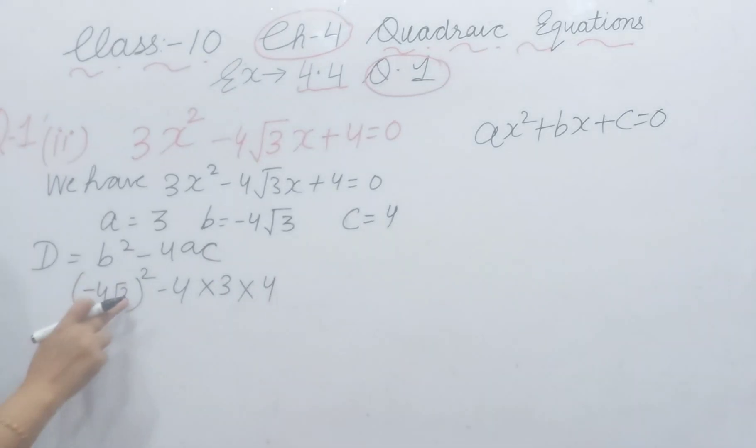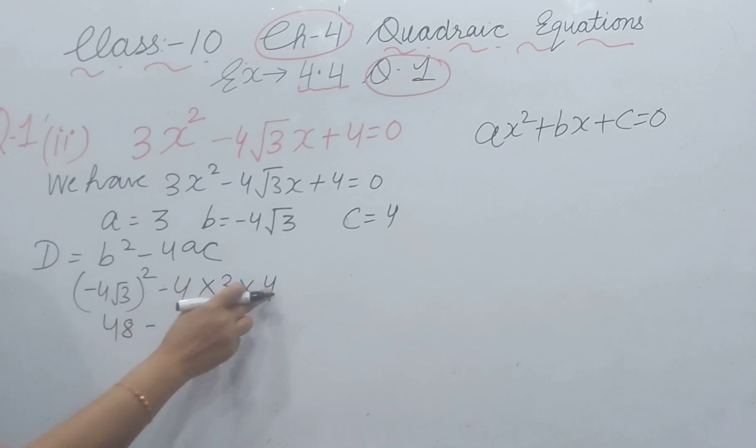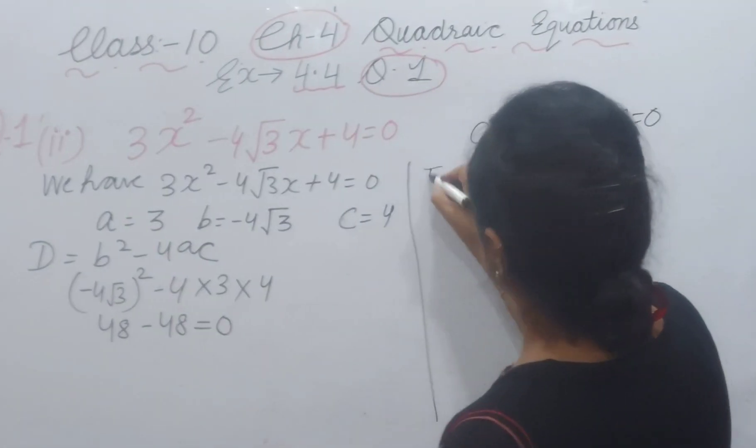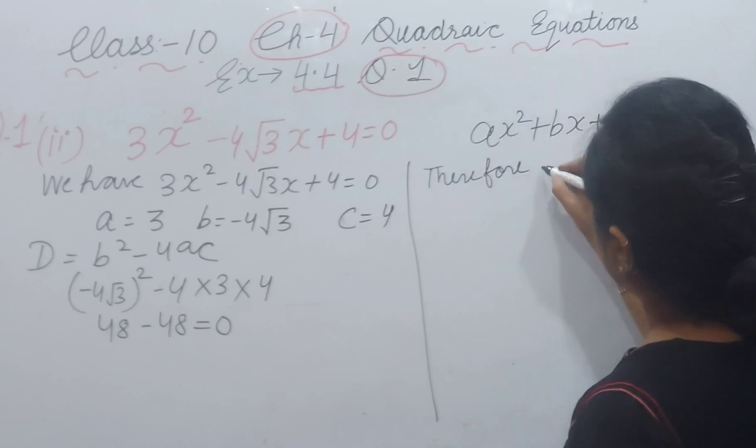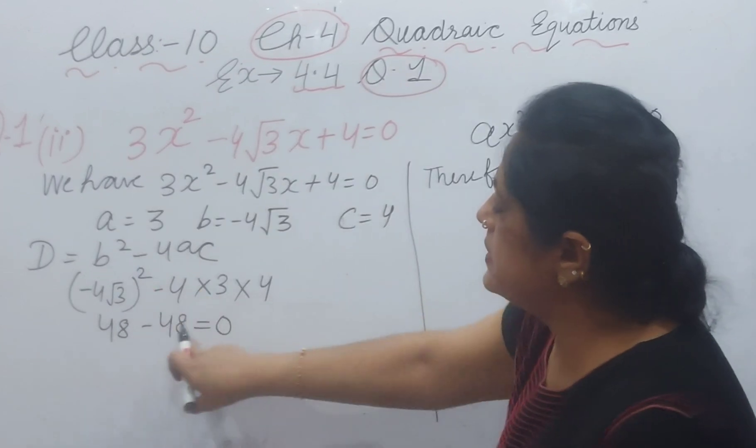(-4√3)² = 16 × 3 = 48. The minus sign cancels because it's squared. 4 times 3 times 4 equals 48. So we get 48 - 48 = 0. Therefore, D = 0.